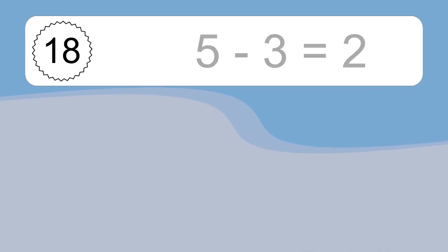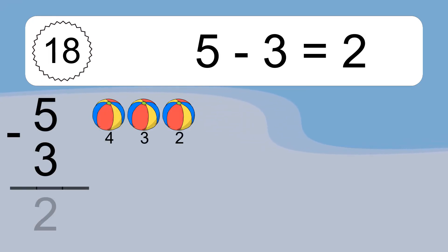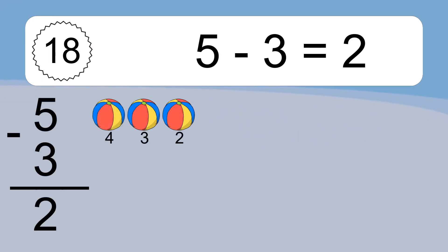5 minus 3 equals what? 5 minus 3 equals 2. Let's count it: 4, 3.